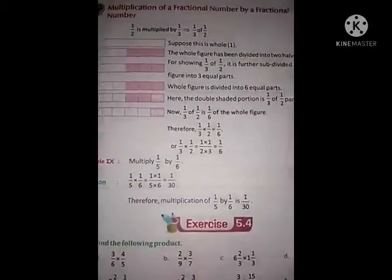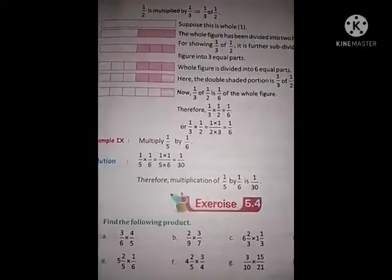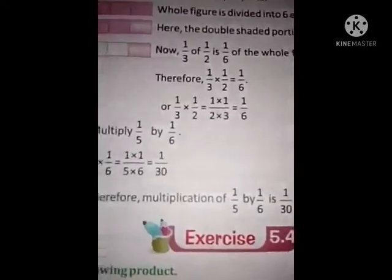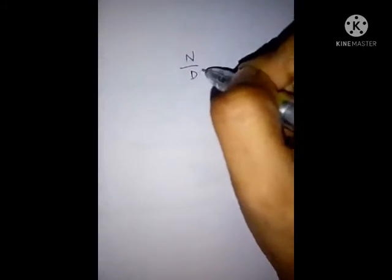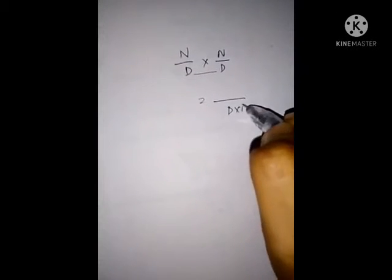Means, both are fractional numbers we have to multiply. This is very easy. See, in a fraction, numerator by denominator into numerator by denominator. We have to multiply denominator with denominator, numerator with numerator, like this.